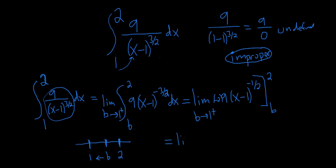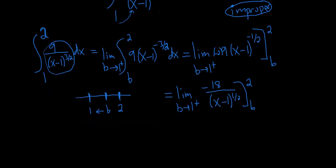Let's rewrite this. This is the limit as b approaches 1 from the right. Let's go ahead and clean it up a little bit. This is negative 2 times 9, so negative 18. Let's bring down the other piece and write it as x minus 1 to the 1 half. We're going from b to 2.